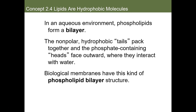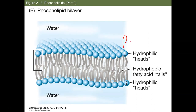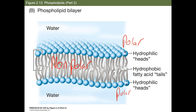On the outside and inside of the bilayer you have a polar region, but in the middle you have a large nonpolar region. This makes it very difficult for polar molecules to pass through. Phospholipid bilayers are much more complicated than this simplified picture — this is a simplistic rendering — and we will explore that further in the next couple of units.